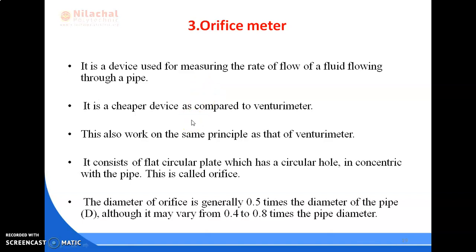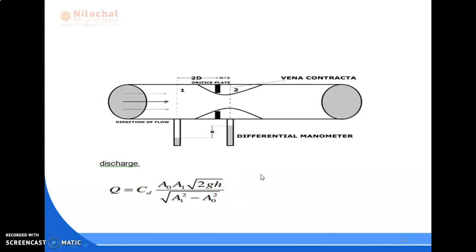It is a device used for measuring the rate of flow of a fluid flowing through a pipe. It is a cheaper device as compared to venturimeter and this also works on the same principle as that of venturimeter. It consists of a flat circular plate which has a circular hole concentric with the pipe. This is called orifice.